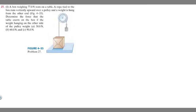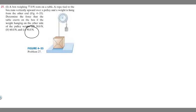In this problem, a box weighing 77 newtons rests on a table. A rope tied to the box runs vertically upward over a pulley, and a weight is hung from the other end. We need to determine the force that the table exerts on the box if the hanging weight is A) 30 newtons, B) 60 newtons, and C) 90 newtons.